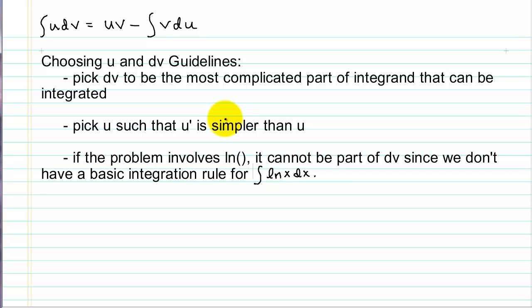One of the most challenging parts of integration by parts is the correct selection of what to pick for u and what to pick for dv. On some problems it won't be obvious how to split up the integrand. Some general guidelines — and again, these are guidelines, not hard and fast rules — the part we want to pick for dv should be the most complicated part of the integrand that we can pick, but it needs to be integratable using one of the basic rules.